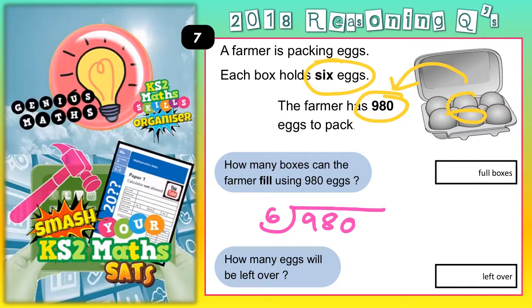So, how many 6s into 9? Goes once, remainder 3, but now makes 38. 6s into 38 — if you know your 6 times table, you know that 6 sixes are 36, remainder 2 to get to 38. 6s into 20 goes 3. 6 threes are 18. That leaves a remainder of 2 eggs.